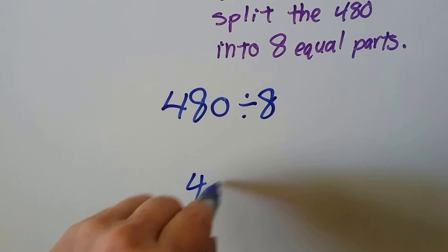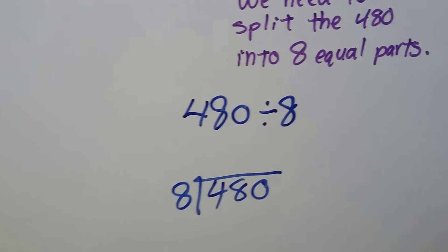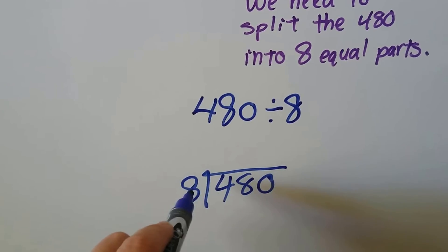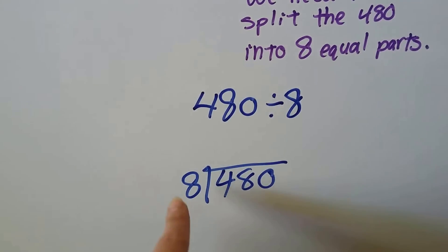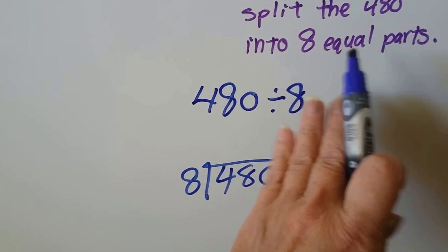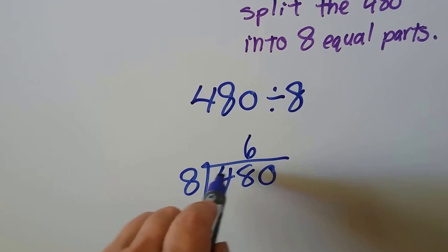Eight can't go into the four, so we're not going to put an answer above the four. Eight can go into 48. Six times eight is 48, so put the six above the eight because that's what we're putting it into, the 48.